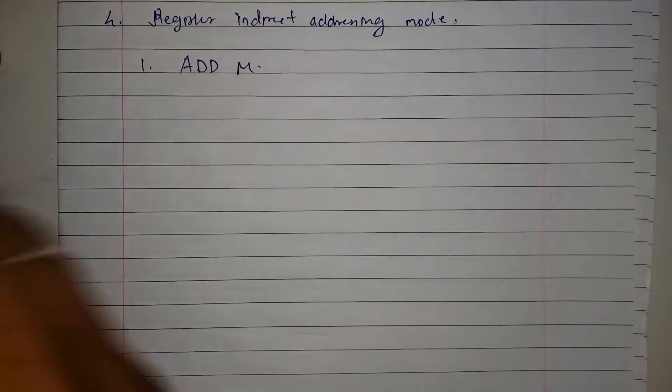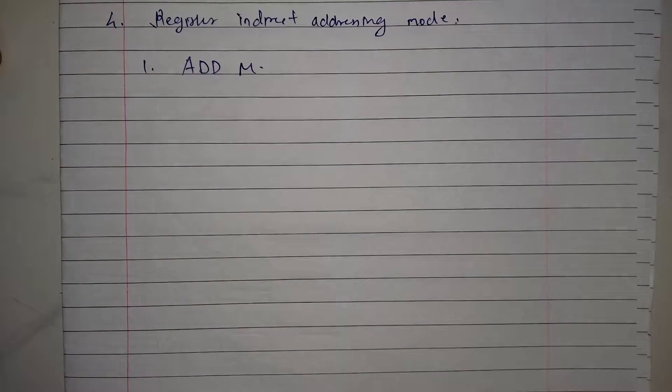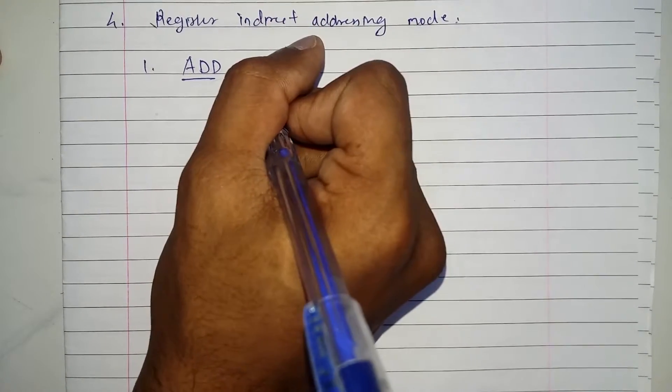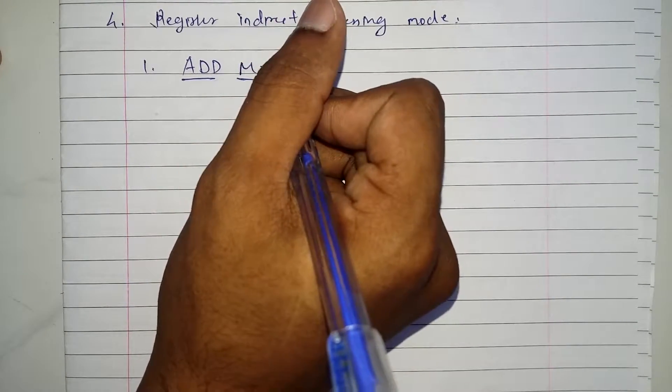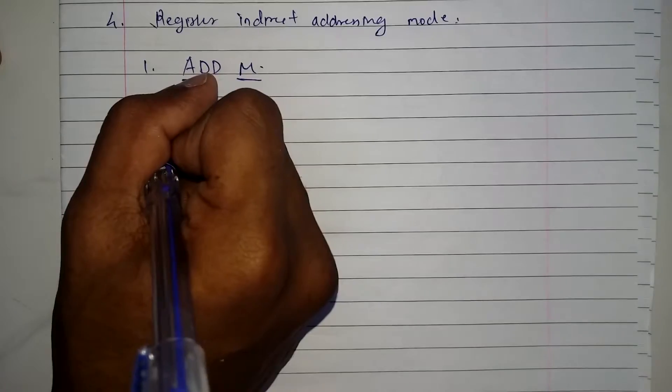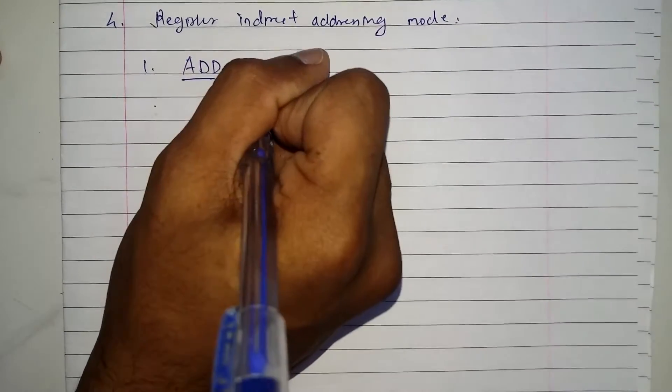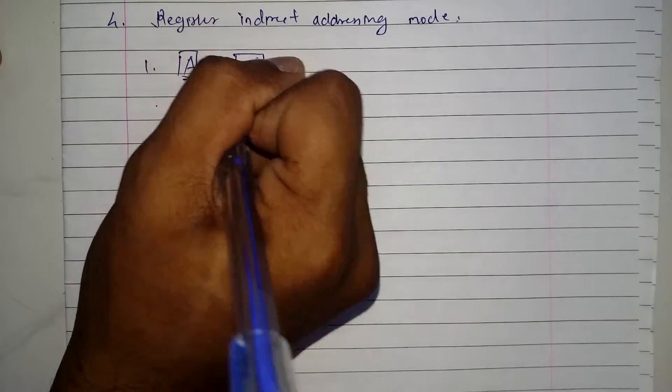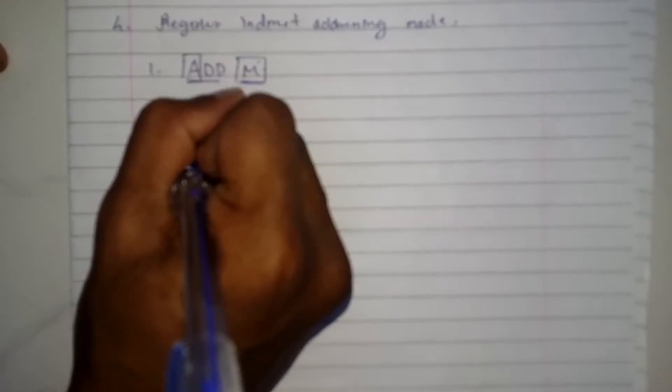So we are going to take this example as ADD M. And what this instruction will do is this instruction will add the content stored in this memory location to the accumulator.